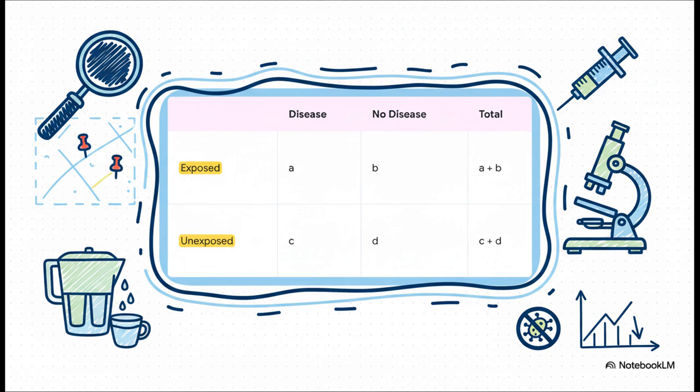The exposed group, that's our folks who use the new filter. The unexposed are the ones who didn't. Then we just give each box a nickname, A, B, C, and D. These are just placeholders to make the math super easy to follow.